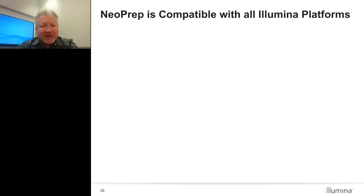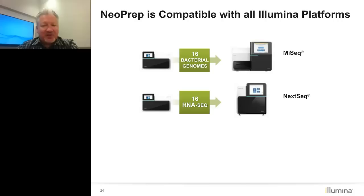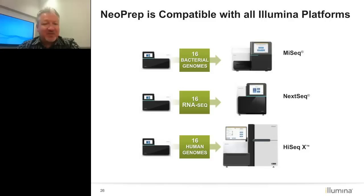NeoPrep libraries are completely compatible with any of our platforms. For example, you could prepare 16 bacterial genomes using the DNA nano kit and sequence those on a MiSeq to reasonable coverage of all 16 genomes. If you use NeoPrep to create 16 RNA-Seq libraries, that's a good match with our NextSeq platform, giving you an average of at least 25 million reads per sample. Or if you're doing human genome sequences using the nano kit, you could run 16 human genome sequences on one run of a HiSeq X system. NeoPrep for various applications is a fairly reasonable match for different sequencers.